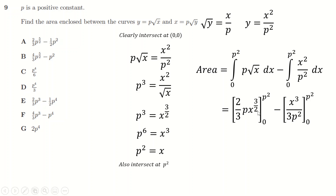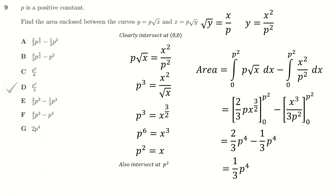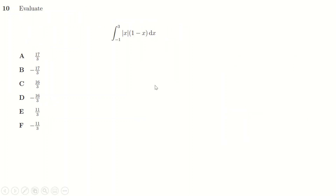Integrating: √x = x^(1/2) raises to x^(3/2) divided by 3/2, which is the same as multiplying by 2/3. Substituting p² in: the first term gives (2/3)p³ and the second gives (1/3)p⁴/p² = p⁴/(3p²) = p⁴/3. Subtracting and simplifying, the area is p⁴/3.